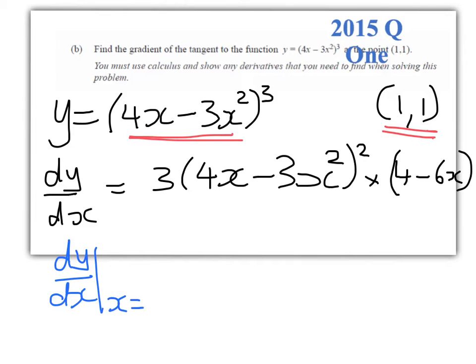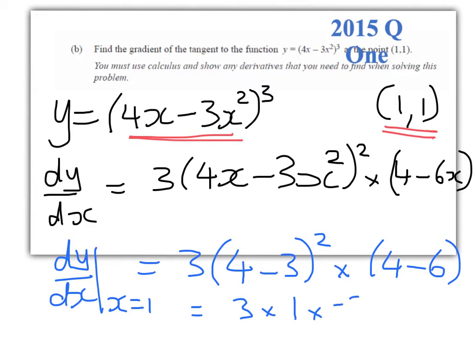So we can write it like that. So it's 3 times (4 - 3)² times (4 - 6), which equals 3 times 1² which is 1 times negative 2, which gives us negative 6. And that is an achieved question.